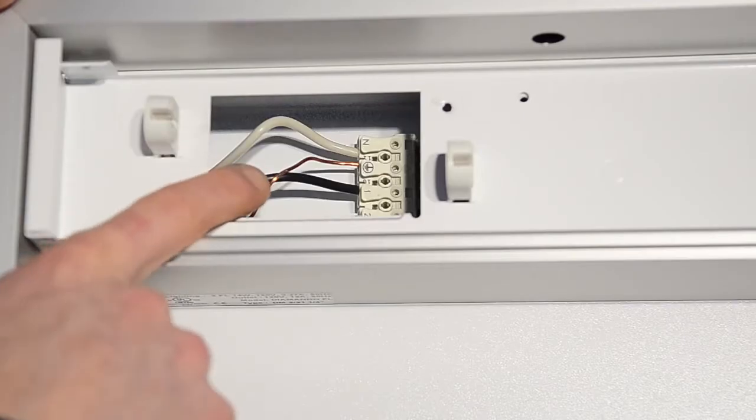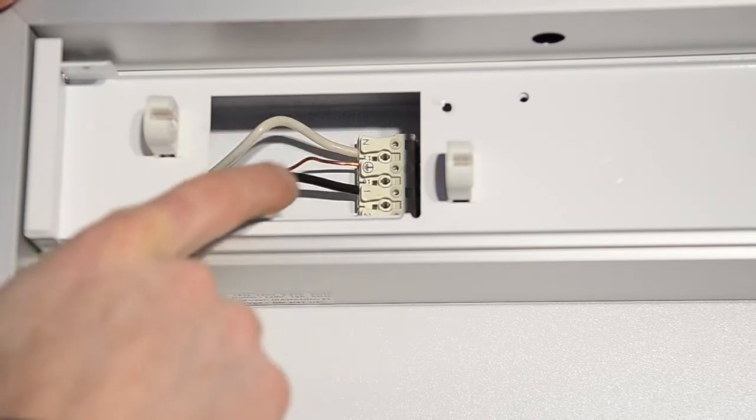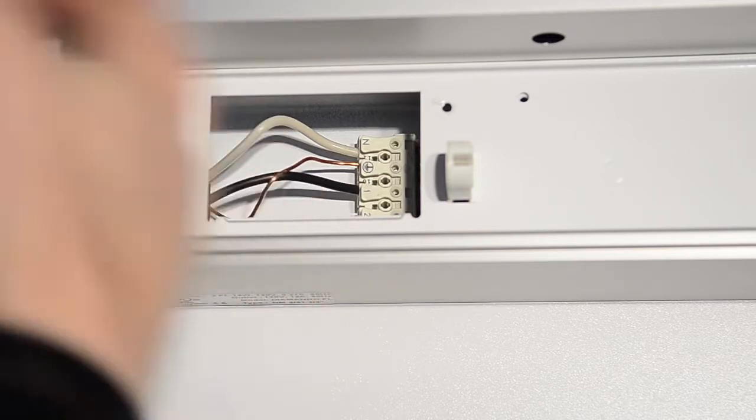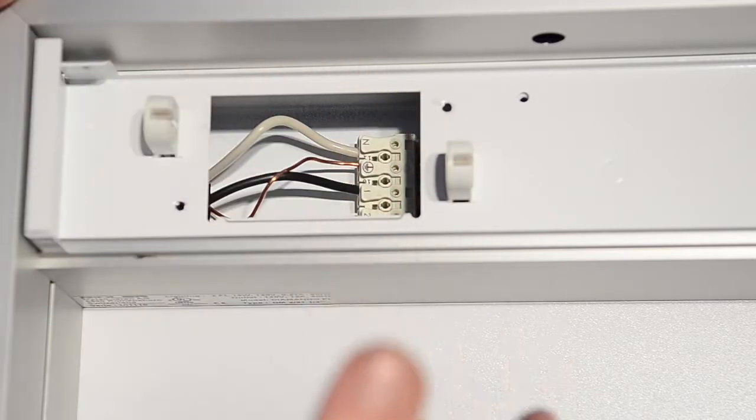So the wires we hooked up now are for the light only. We have the white one for the neutral. Here is the grounding and we have line one for the light. There needs to be a second wire for the outlet which needs to be wired permanently to GFCI, which goes into number two.